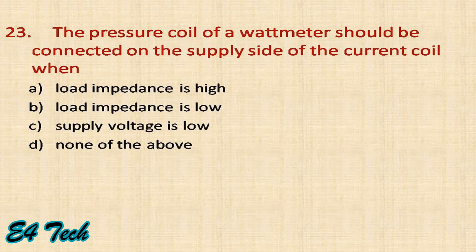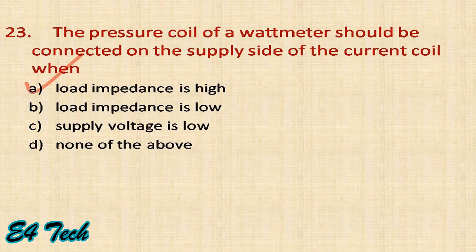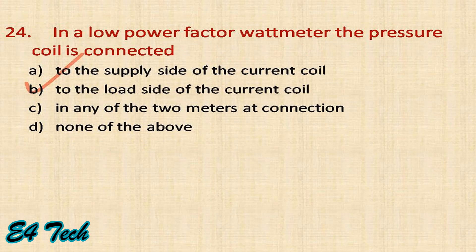The pressure coil of a wattmeter should be connected on the supply side of the current coil when the load impedance is high. In the case of a low power factor wattmeter, the pressure coil connection changes — when load impedance is low and power factor is low, it should be connected to the load side of the current coil.